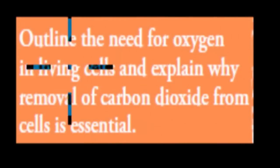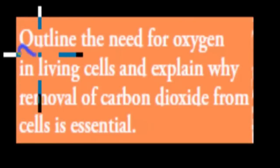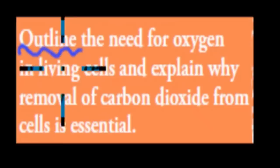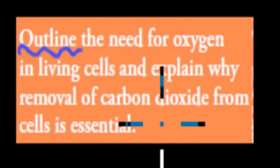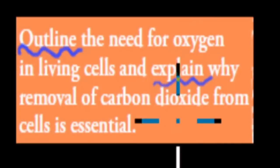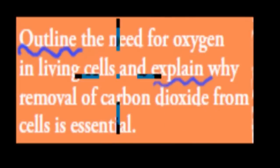There's two parts to this. First, we have to outline the need for oxygen in living cells. Outline just means we need to mention the main points when it comes to why we need oxygen for living cells. The second part means explain why the removal of carbon dioxide from cells is essential. So we have to explain what carbon dioxide does and why it's essential that we remove it. I'll start with the first part.